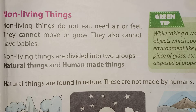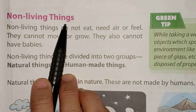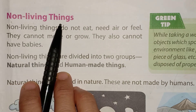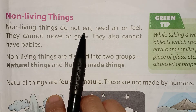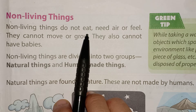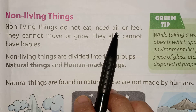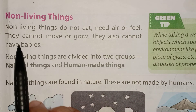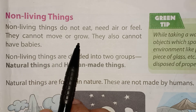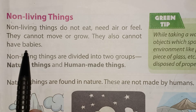Now let's move to our next topic: non-living things. What are the characteristics of non-living things? Non-living things do not eat. See the sofa, windows, chairs, tables — they don't need food. They don't need air and they don't feel. They cannot move or grow, and they also cannot have babies.